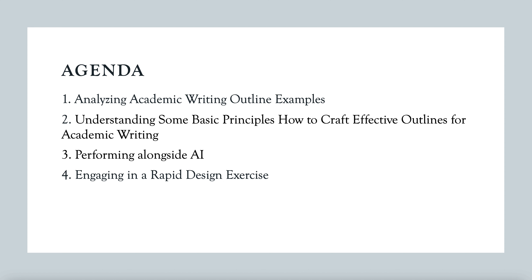After that, we will get into the exciting part — performing alongside AI. We will demonstrate how AI can assist in the outlining process, making it faster and more efficient, so you will see how these tools can complement your own skills and enhance your productivity. Finally, we will engage in a rapid design exercise where you will get hands-on experience applying what we have covered. You will create your own outline using both traditional methods and AI tools. By the end of this workshop, you will have a solid understanding of how to create an effective outline and how AI can be valuable in your academic writing process.